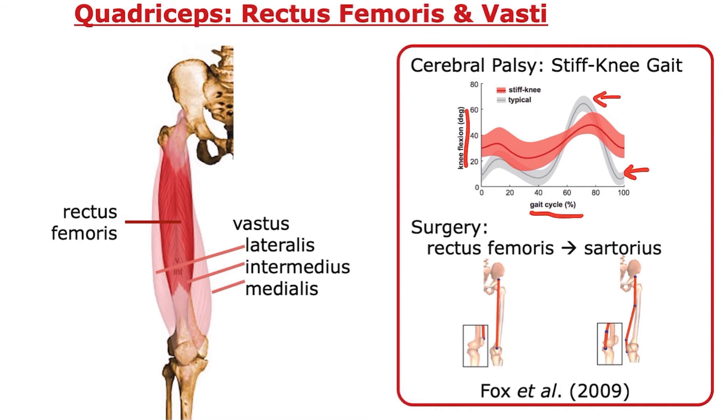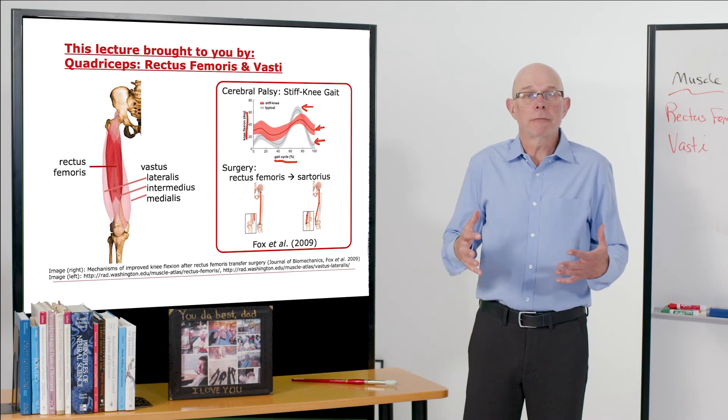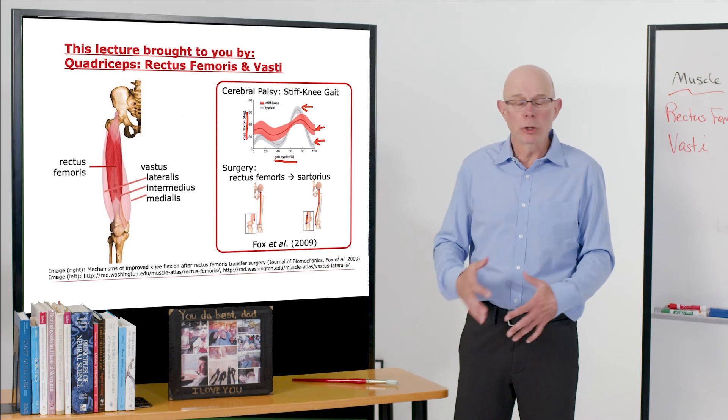In stiff knee gait, that's absent. The knee doesn't flex or extend much. That's problematic because if your knee doesn't flex, you don't clear the foot from the ground. You can trip. It's energy inefficient.